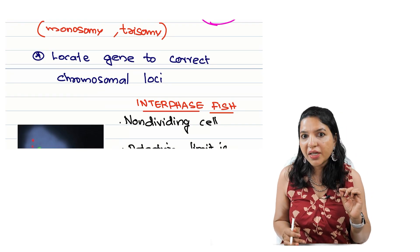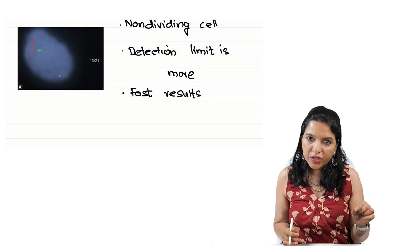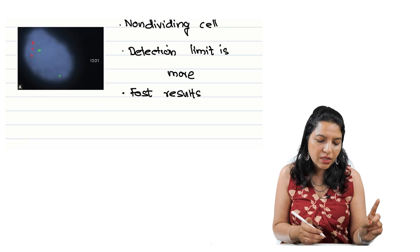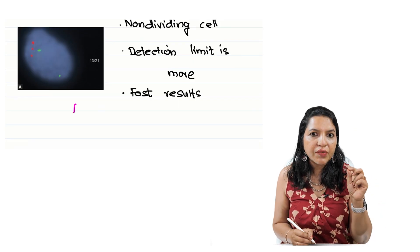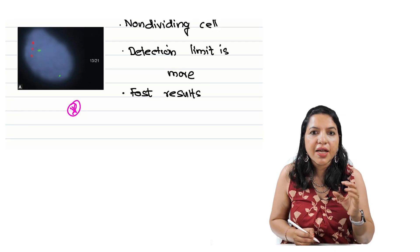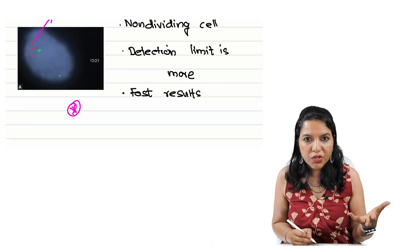Then if you get an image like this, what is this? This is also a FISH, but this FISH is different. It is an interphase FISH. So if the chromosome 21 is colored in red, it means that the abnormality here is trisomy 21.